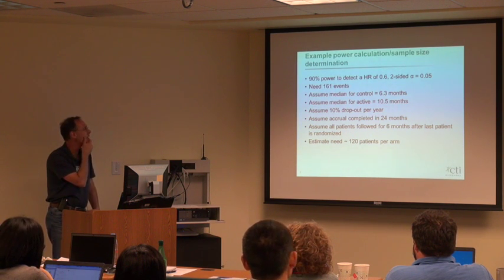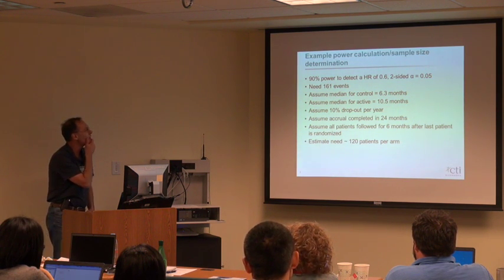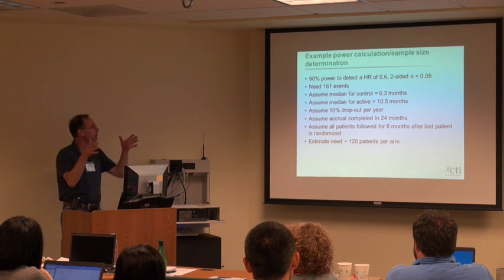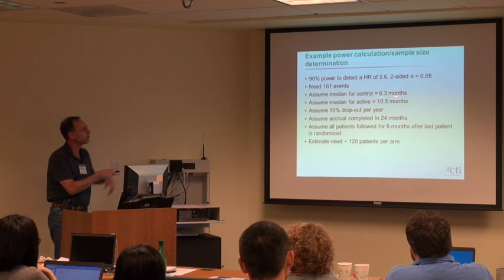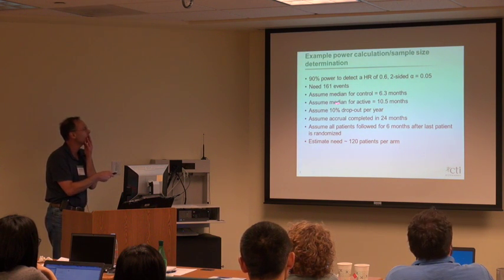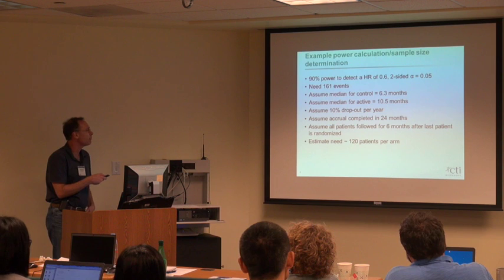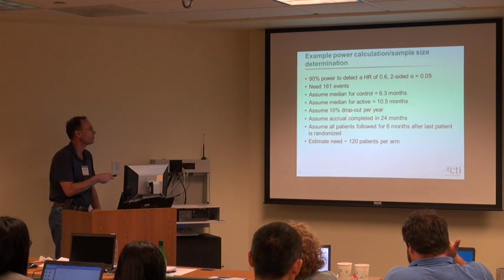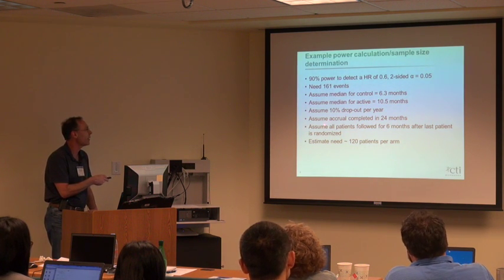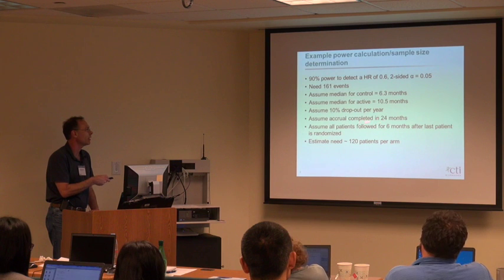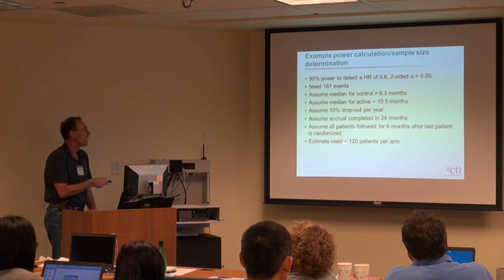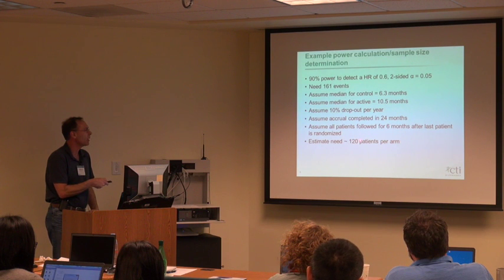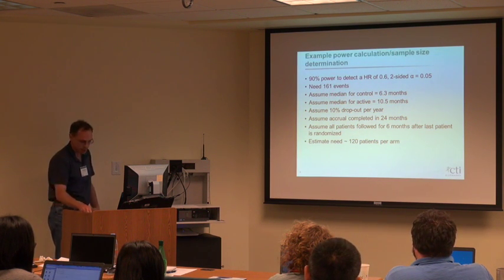Let's say we want to power our trial to have 90% power to detect a hazard ratio of 0.6. We have data from another study showing the control median is 6.3 months, and we'll assume the active arm median is 10.5 months. We'll assume a 10% dropout rate per year, accrue over 24 months, and follow all patients for six months after the last patient is randomized. This requires approximately 120 patients per arm to realize 161 events.